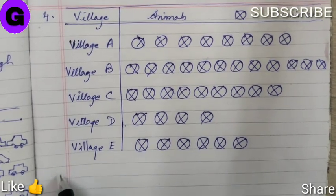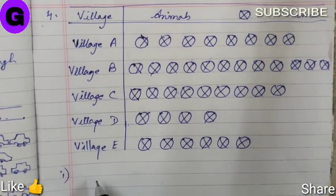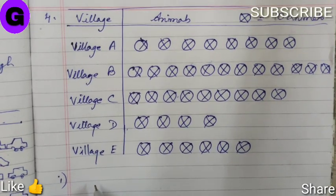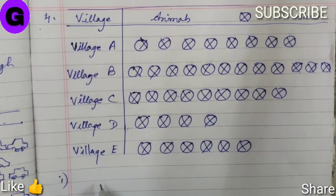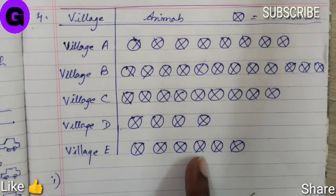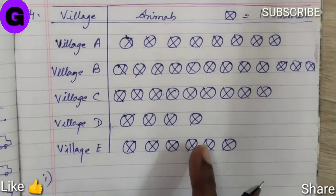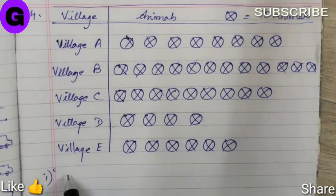The first question is: How many symbols represent animals of village E? Village E has 6 symbols. So 6 is the answer.